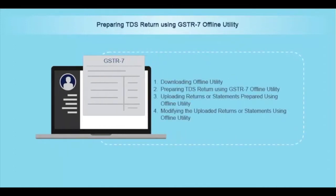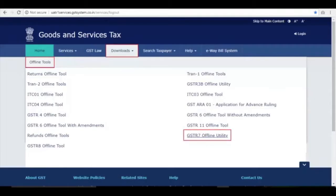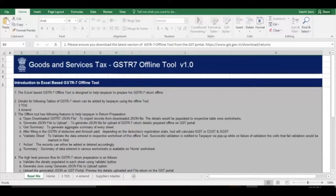This involves multiple steps as displayed on screen. This video will guide you how to prepare TDS return using the GSTR 7 offline utility. Once you have downloaded and opened the GSTR 7 offline tool, go through the Read Me section carefully.